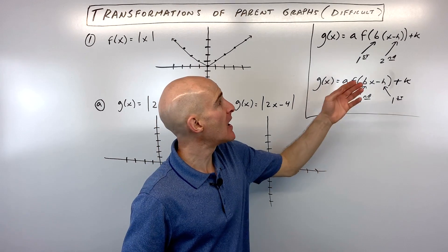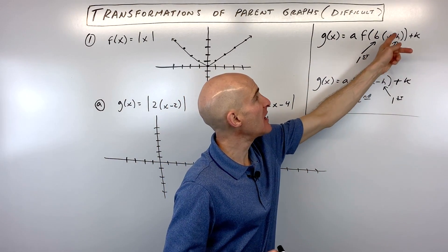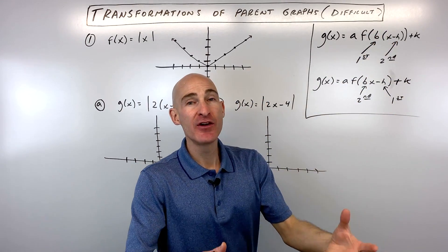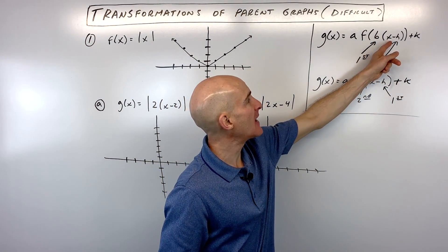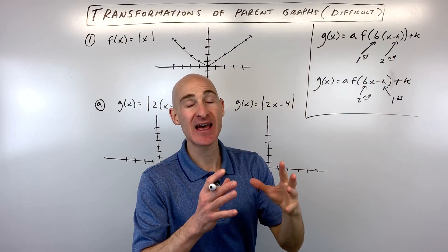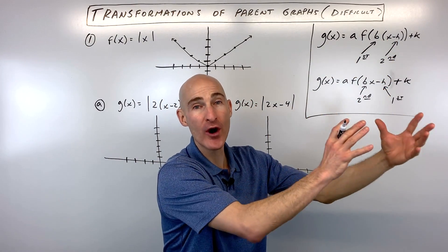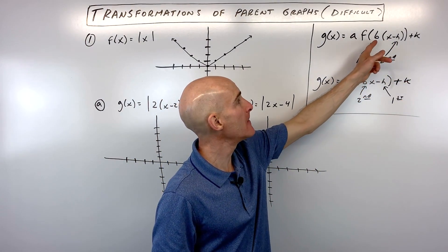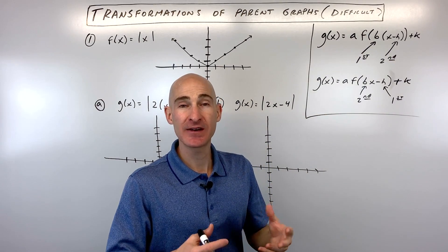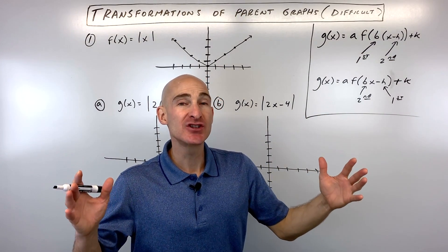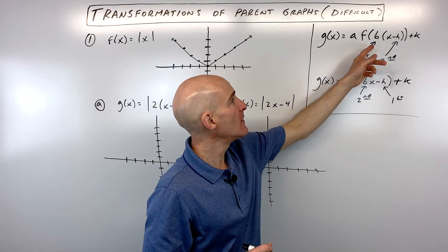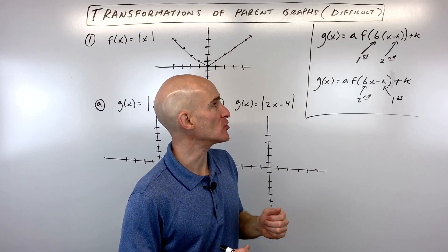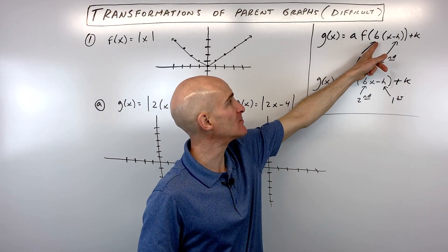The important thing to remember is that the numbers grouped with the x — both b and h — are going to have the opposite effect on the graph. So if it's x minus h, it actually goes right h; if it's x plus h, it shifts left h. With b, if b is greater than one — say two — it actually divides all the x-coordinates by two. If b is one-half, it multiplies the x-coordinates by two. So b has the reciprocal effect.